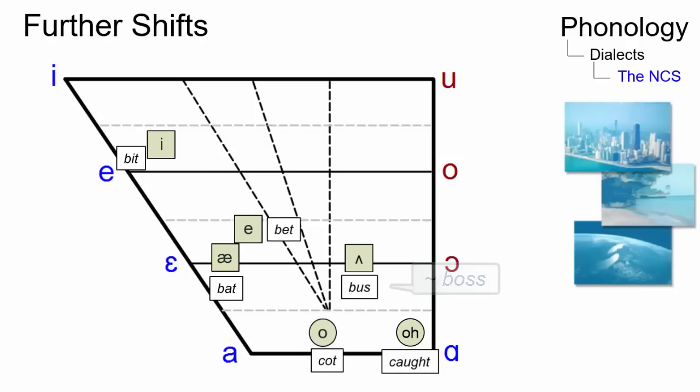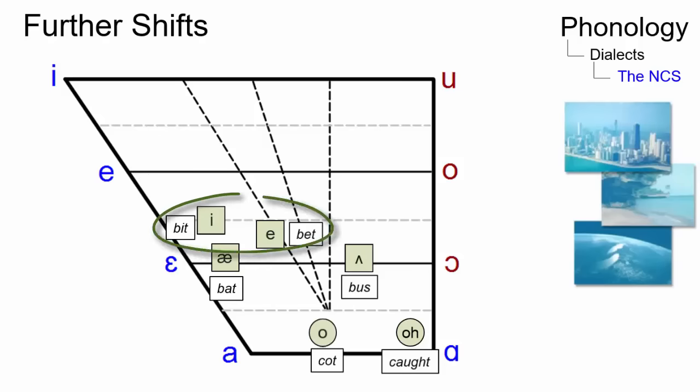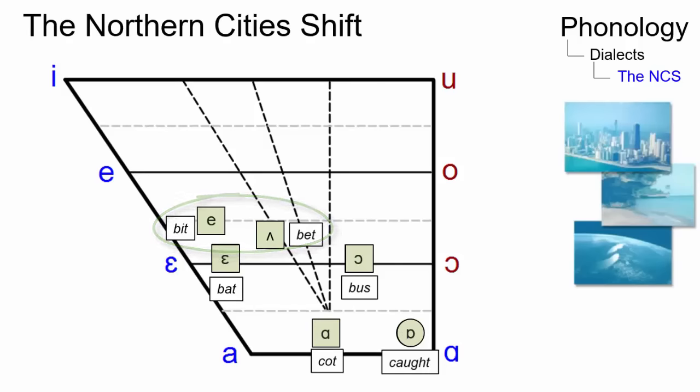Finally, the vowel in bit is backed and lowered so that its pronunciation nears the word bet. The connections among these changes are naturally determined and the whole shift resembles a clockwise rotation of the vowels in the mouth.